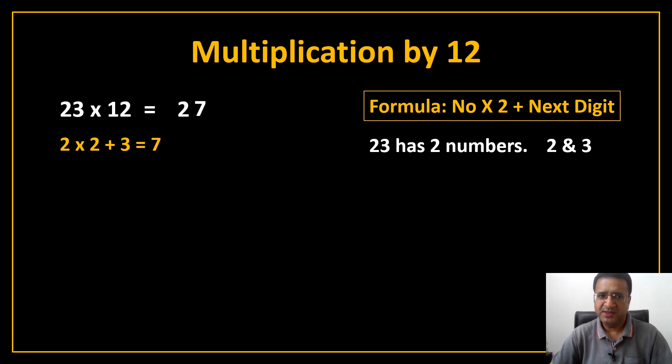Now, repeat the formula. In 23 there are two numbers. Next number is 3. So, number x 2. So, 3 x 2 and after 3 there is no number. So, you can just add 0 and it will give you 6 and you just insert 6 here and it is your answer. See, it's a piece of cake to multiply any number with 12 with the help of Vedic Maths.